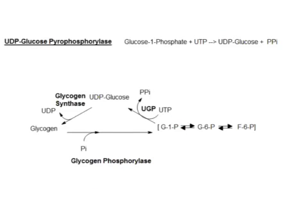Hi there folks, so today we're going to talk about how glycogen is made and stored in the body. It all starts, again, with the hexose monophosphate pool, the good old HMP.